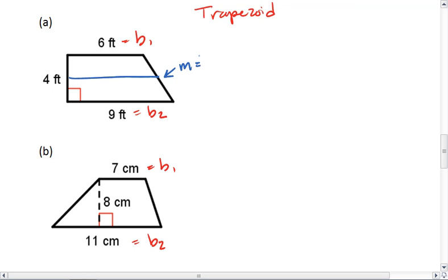So here, the mid-segment is the average of 6 and 9. You can actually add 6 and 9 together and divide by 2, or you can realize that their halfway point is 7.5. Then the area is that mid-segment times the height, which in this case is 4, because we get that right angle. I get 7.5 times 4, which gives me an area of 30 feet squared.